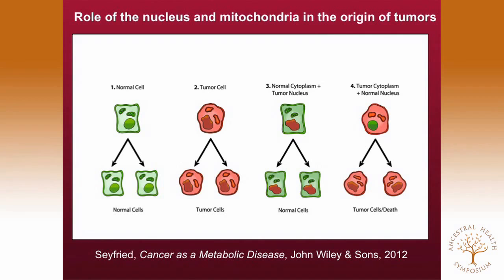What I've shown here is a normal cell in green, a tumor cell in red. I've shown a normal nucleus and cristae in the mitochondria. Normal cells beget normal cells. When we look at the cancer cell in red, we have a dysmorphic nucleus and we have mitochondria that have absent cristae, indicating defects in both the nucleus and mitochondria in the cancer cell. Cancer cells beget cancer cells.